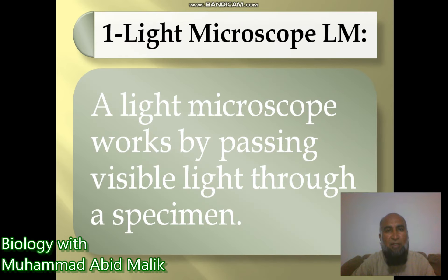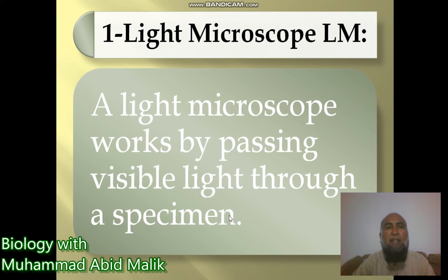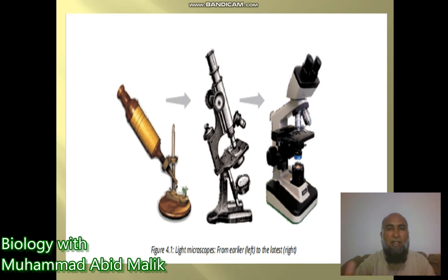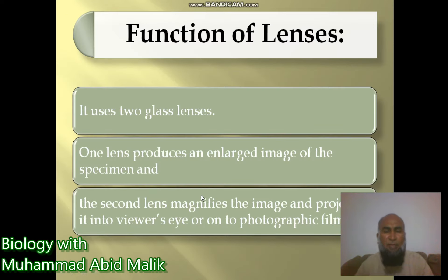A light microscope works by passing visible light through a specimen. You can see here different light microscopes where light passes from the specimen. In this picture, a mirror is fitted that reflects light through the specimen. There are two lenses in the light microscope.